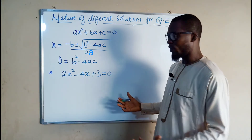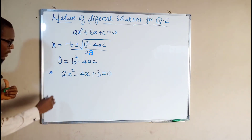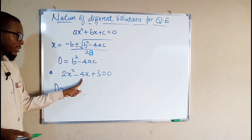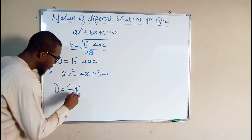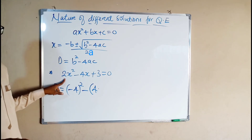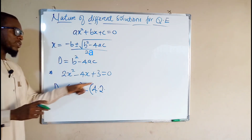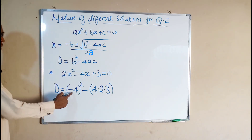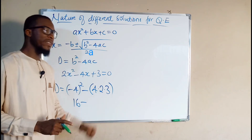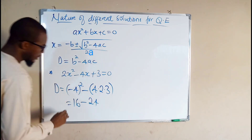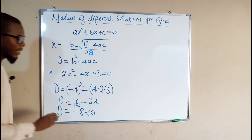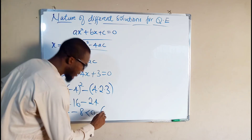Now let us look at the last one. Here is the last form, and we want to see the form of solution in this quadratic equation. We have d equals b squared minus 4ac. b is the coefficient of the middle term, which is negative 4. So we have negative 4 squared minus 4 multiplied by a, which is the leading coefficient 2, multiplied by c, the constant 3. Negative 4 squared is 16, minus 4 times 2 is 8, and 8 times 3 is 24. This equals 16 minus 24, which is negative 8. So d equals negative 8, which is less than 0. Hence, we say this quadratic equation has an imaginary solution.